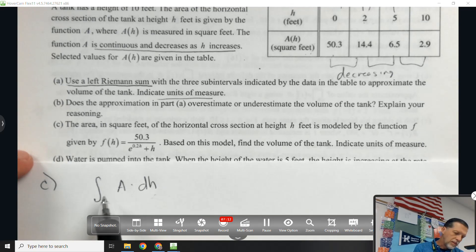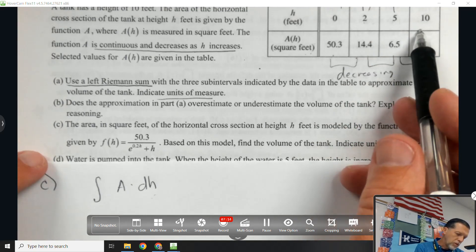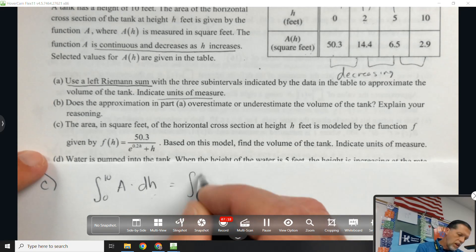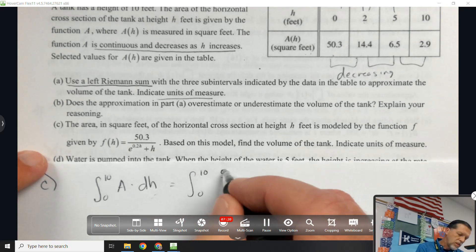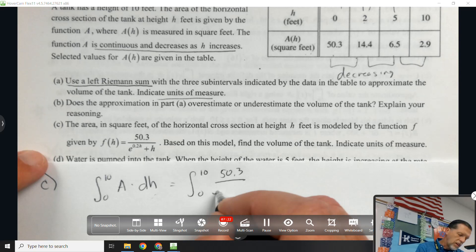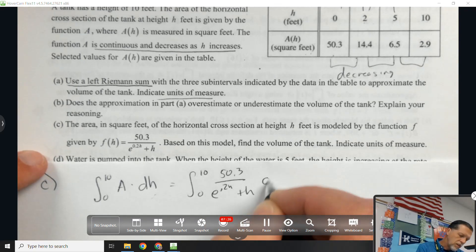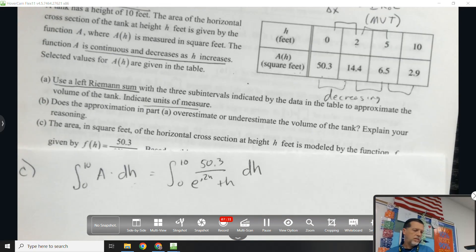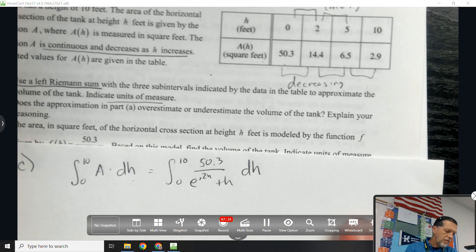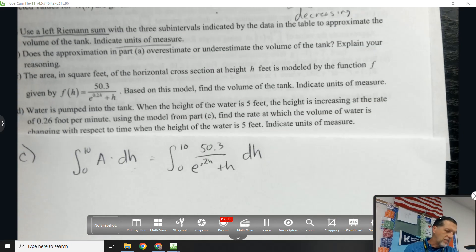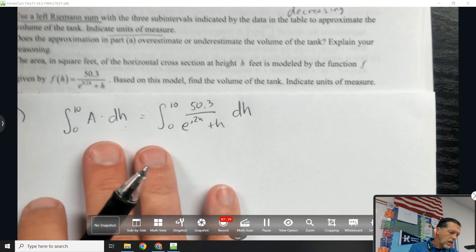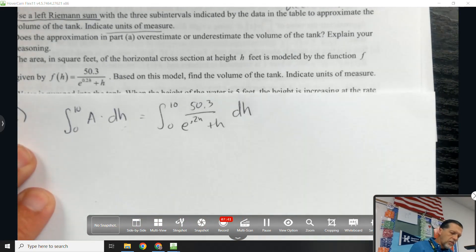Let's see, I need my limits. I guess it goes from 0 to 10, so 0 to 10 of that function, because that function tells me the height. Find the units, indicate units of measure. That's going to be feet cubed again. This is a calculator question, so...